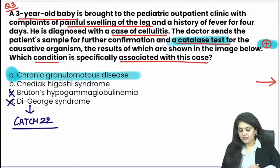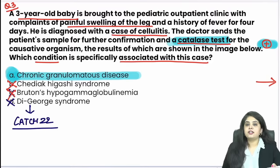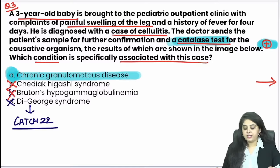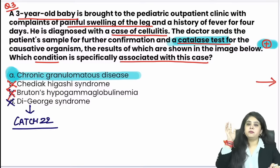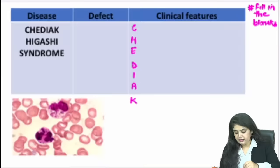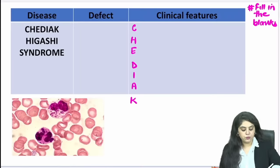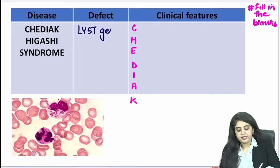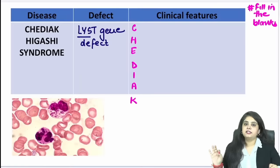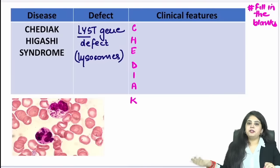In Bruton's, hypogammaglobulinaemia means immunoglobulins are less — specifically IgG levels go down. Because B cells are not working, immunoglobulins are not formed. If IgG goes down, there is defective opsonization, leading to infections. But in this question, the trio of boys/B cell/BTK was not present, so Bruton's is ruled out.